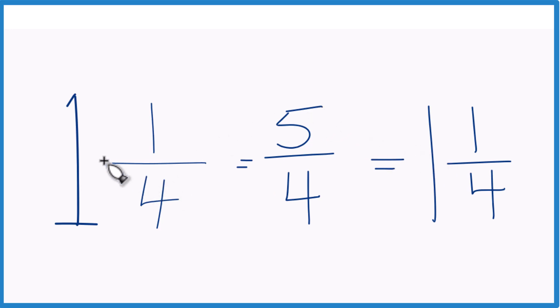So in answer to our question, the mixed number 1 and 1 4th equals the improper fraction 5 4ths. And these are equivalent. They have the same value. They're just different representations.